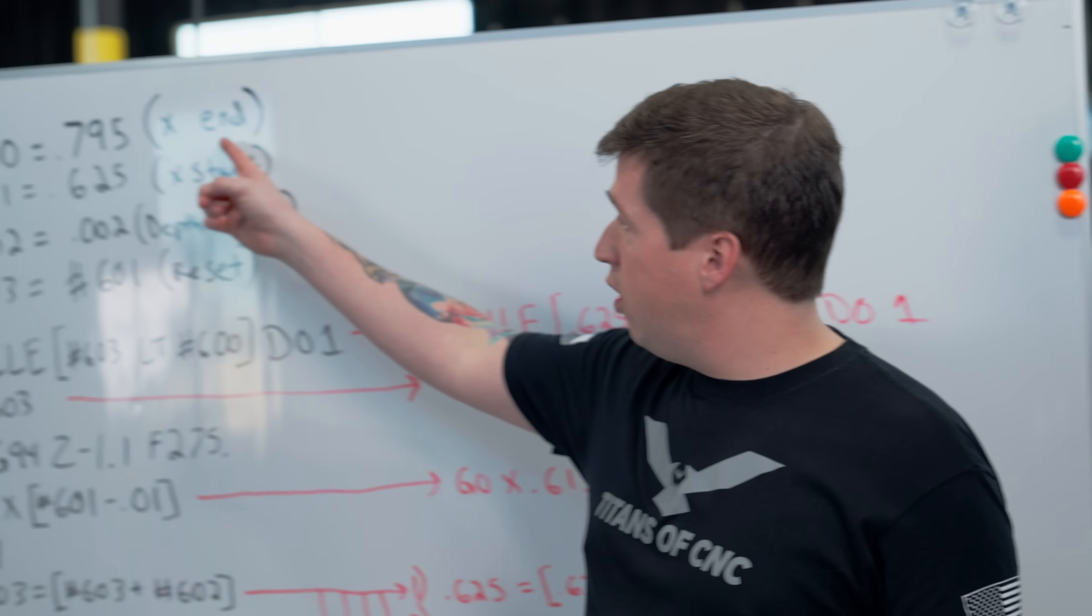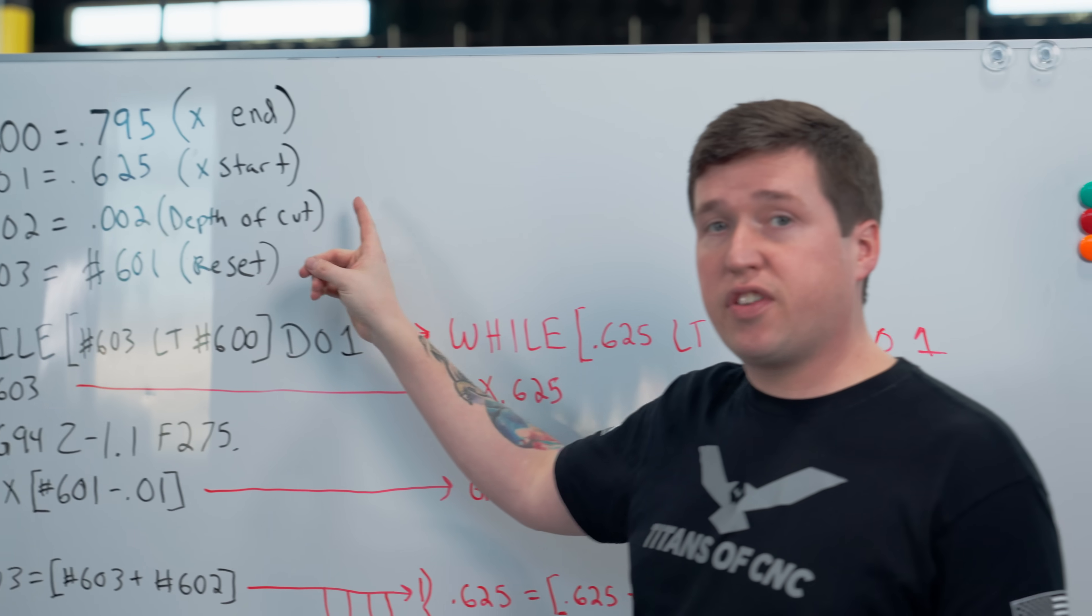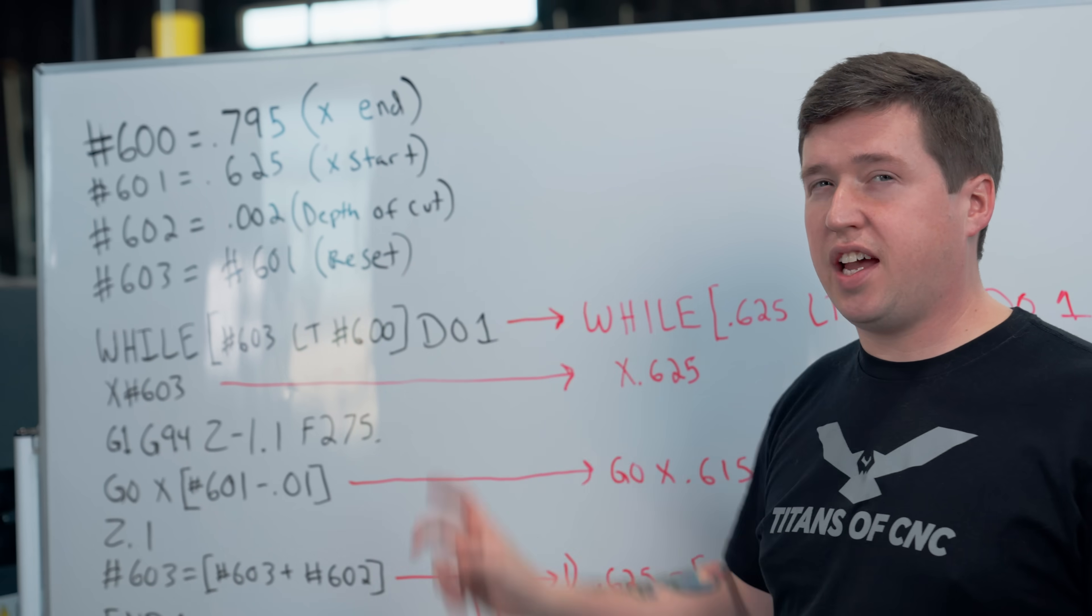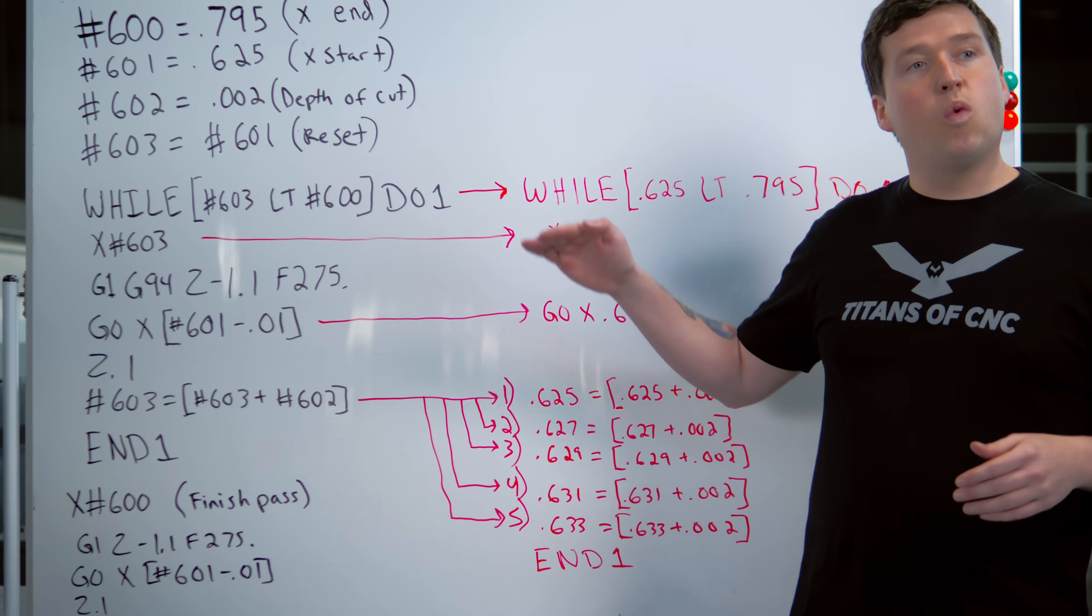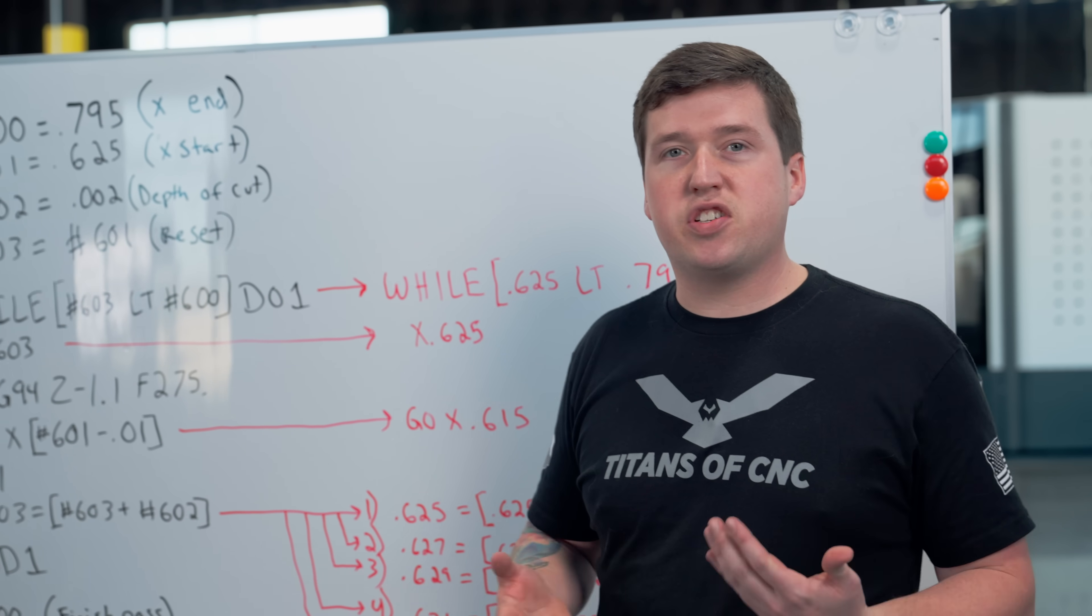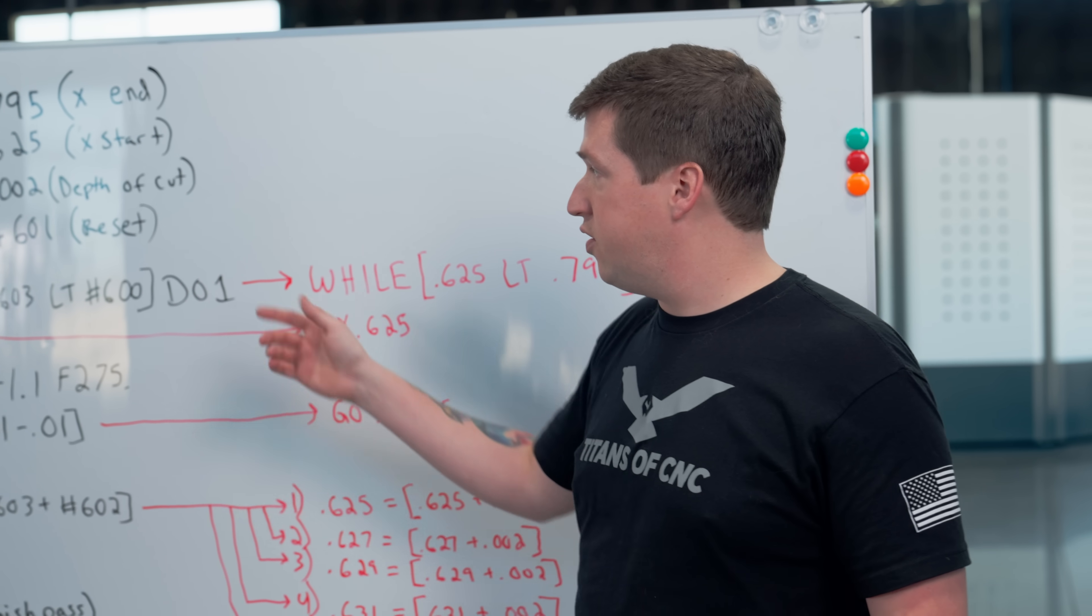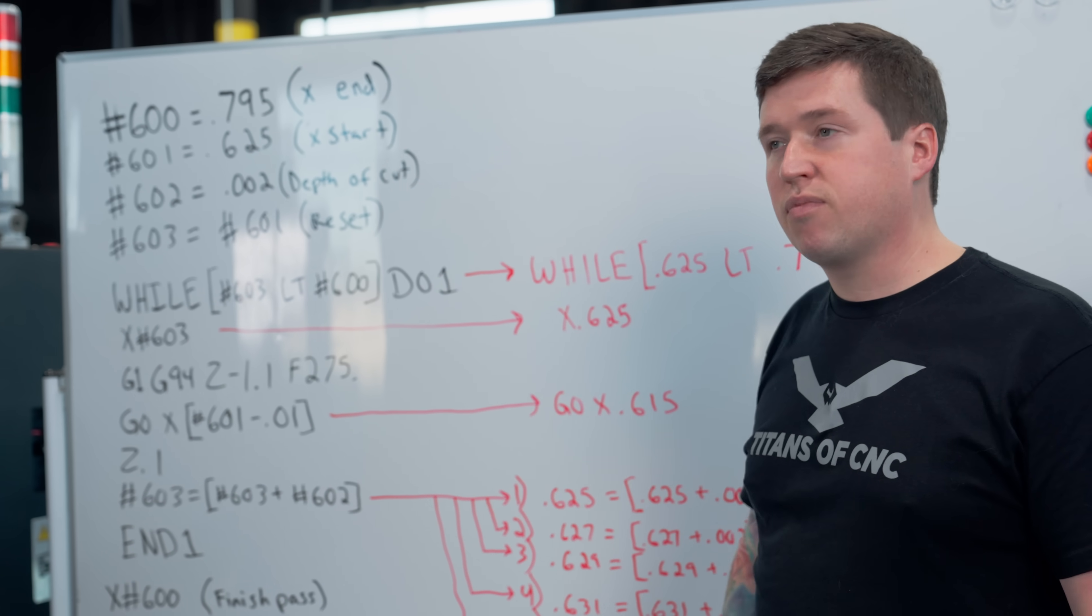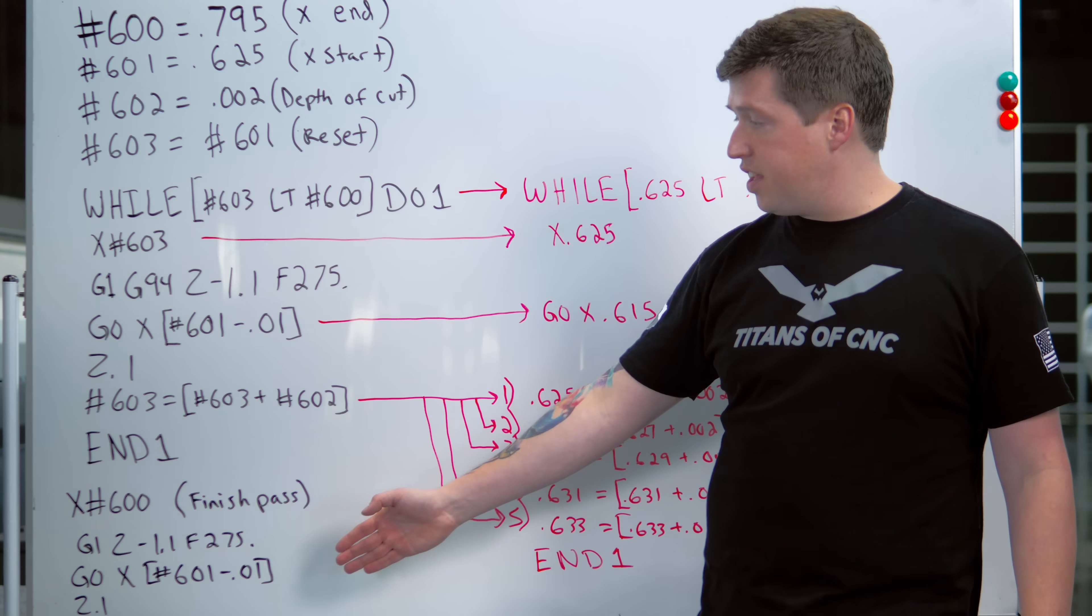Because we're going to loop something over and over, I decided to use a while statement. With every macro, you need to start with what you know. We know we're going to have an end position, a start position, and a depth of cut. The next variable is just a reset. When we do this counter, if you don't reset your counter, then the next time the machine runs it's just going to skip all this because the counter is going to be full. We need to reset the counter before we run this every single time.